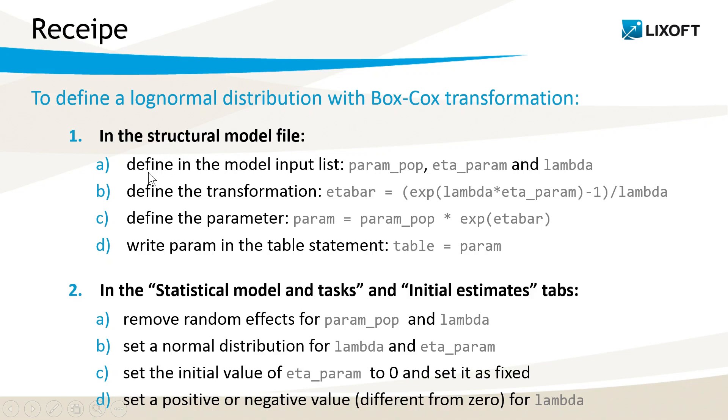The recipe to define the log-normal distribution with Box-Cox transformation is the following. In the structural model file, you define in the model input list, param_pop, eta_param, and lambda, the fixed effect, random effect, and Box-Cox transformation parameter. Then we need to define the Box-Cox transformation with the following formula. Then we define the parameter, with the log-normal distribution taking the transformed eta as an input. And finally, we can write in the table statement the param, such that we can output it, as we have done for the first example.